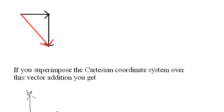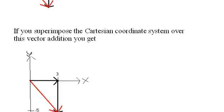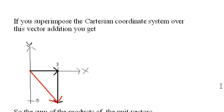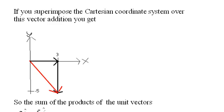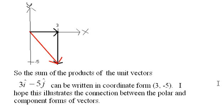If you superimpose the Cartesian coordinate system over the vector addition, you get this. Notice the red vector here is (3, -5). You can write it as (3, -5).